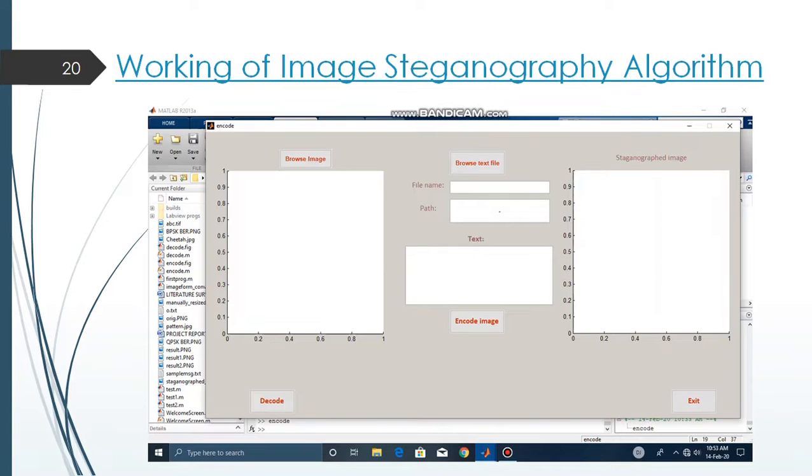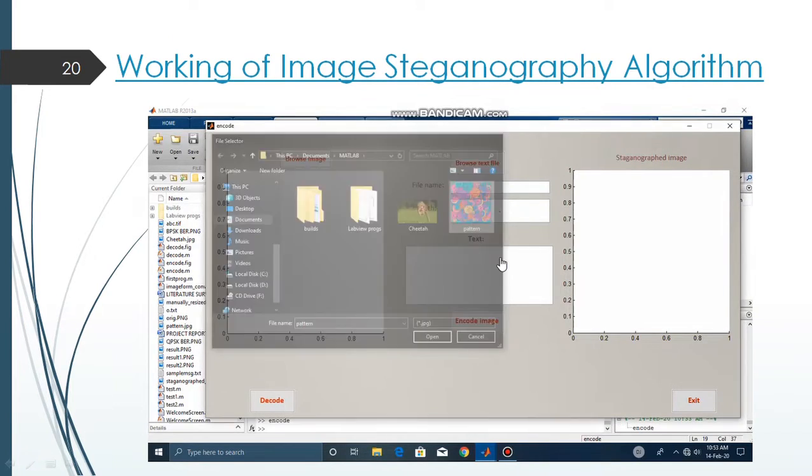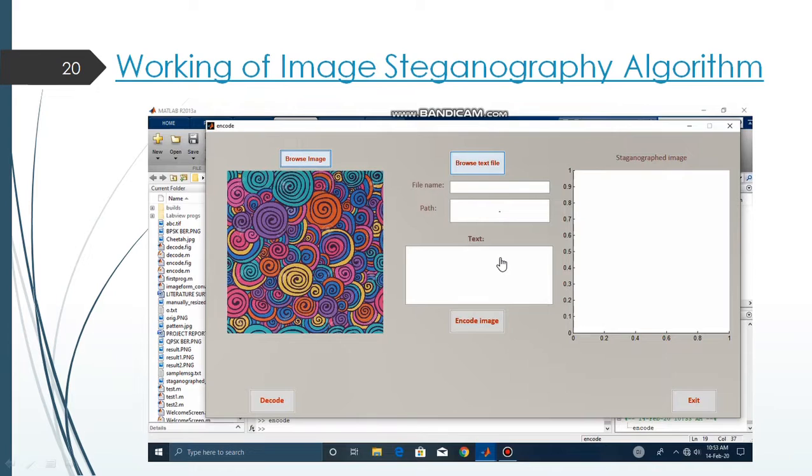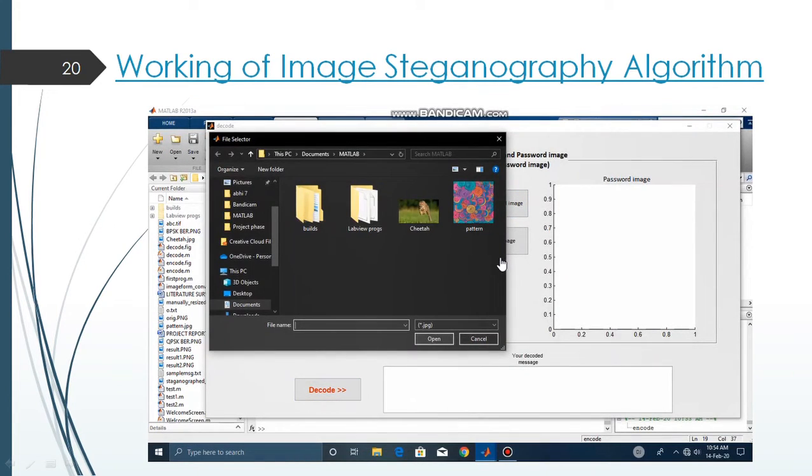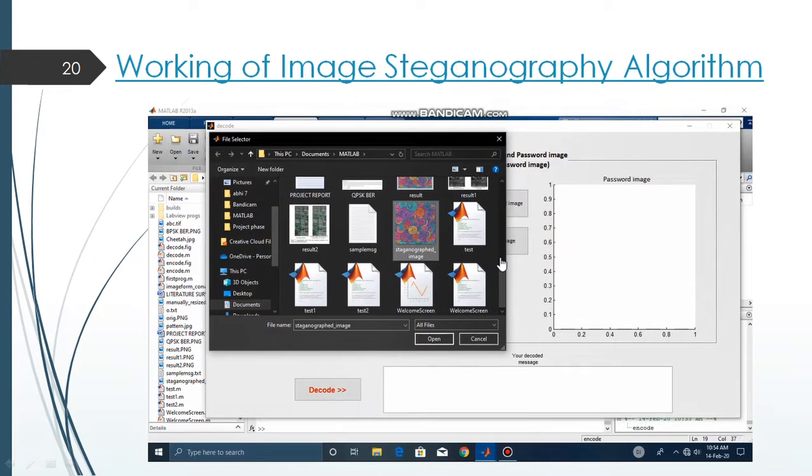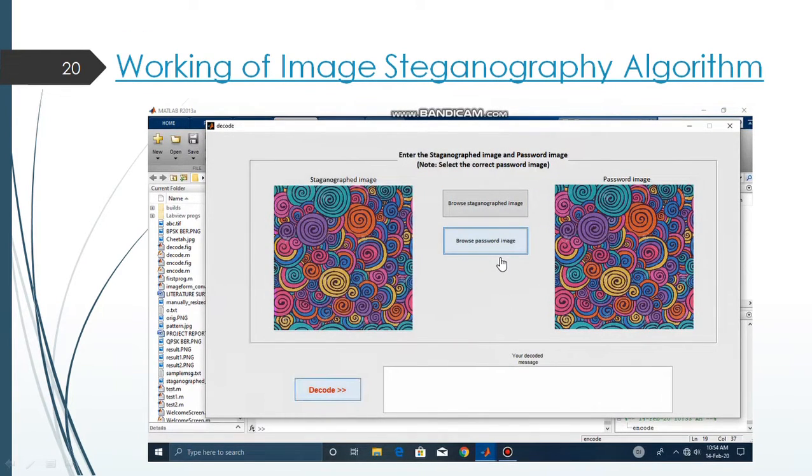This is a video describing the functioning of our application. So we choose the image we want to encrypt. And then we choose the text we want to insert inside the image. And we press the encode button. And after some time we get the encoded image which has the text inside the image. Now after we have got that we can go to the decoding section and select the steganographed image. Then we can select the correct password image. As you can see we have selected the correct password image. And when we press on the decode the message is decrypted correctly.